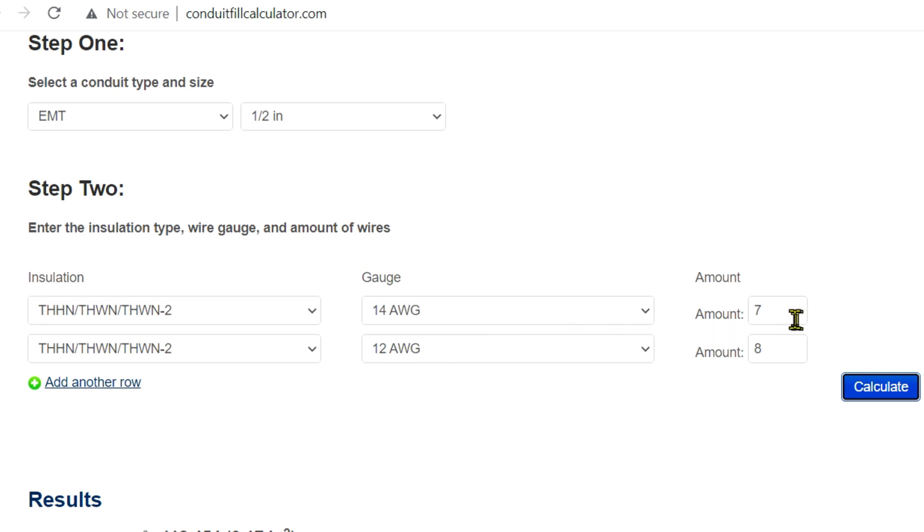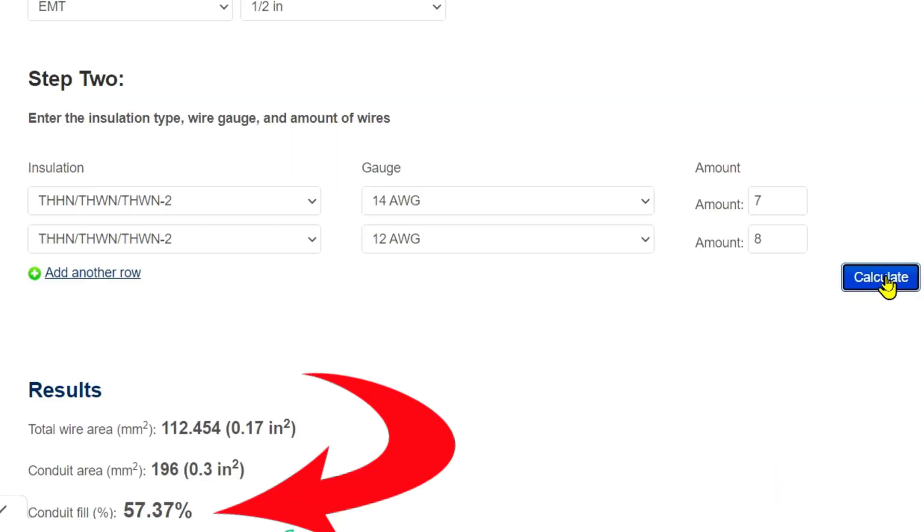So we've got seven 14-gauge THHN and we have eight 12-gauge THHN. We have this all filled out, EMT half-inch, and there it is: 57.37% fill.